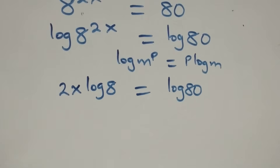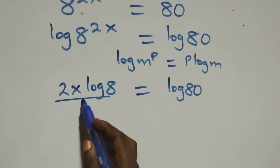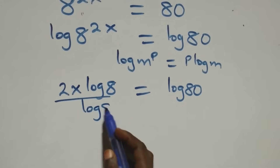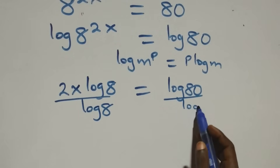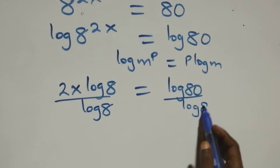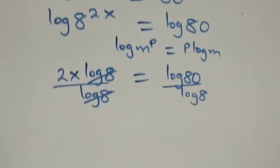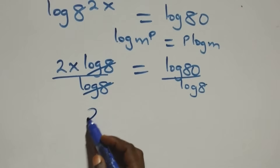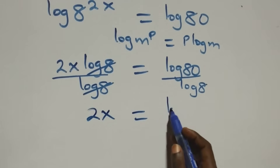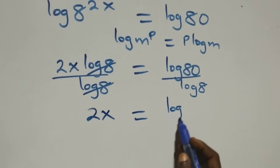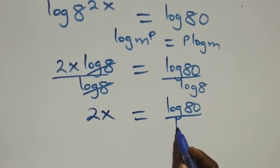From here, we divide both sides by log 8. Log 8 on the left cancels, and we have 2x left, equals log 80 over log 8.